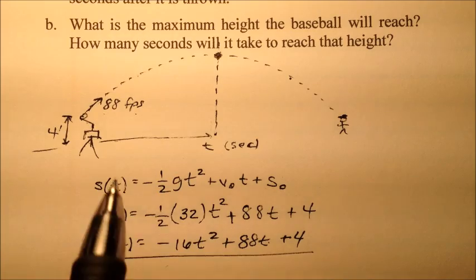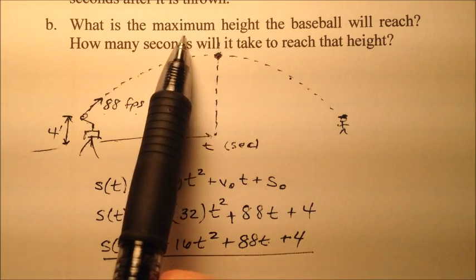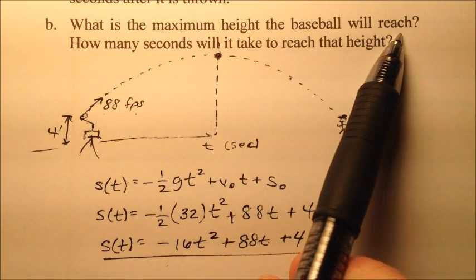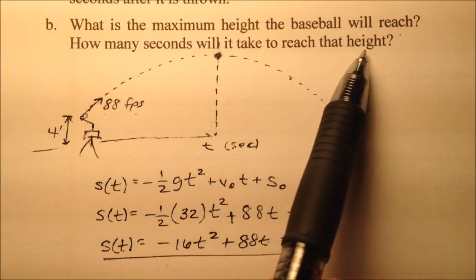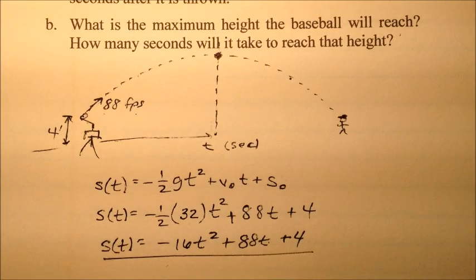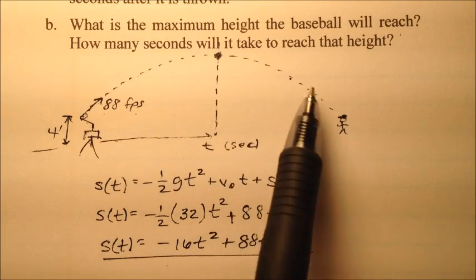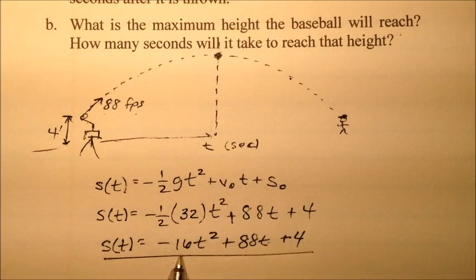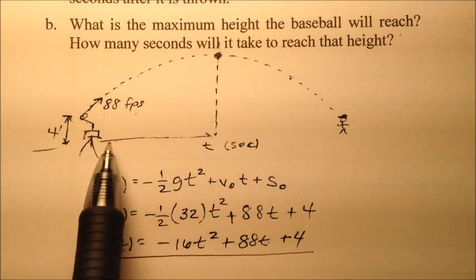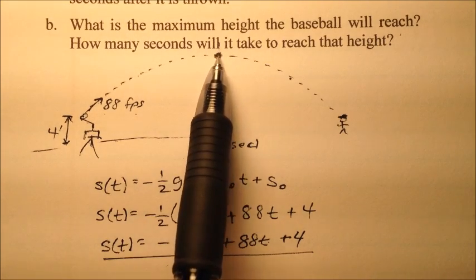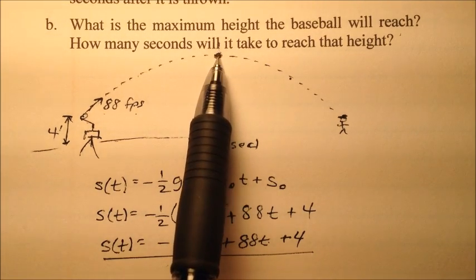In Part B, we're asked: what is the maximum height the ball will reach, and how many seconds will it take to reach that height? We have this parabola opening downward, and we know it opens downward because we have this negative in front. At its vertex, that's the peak, the highest it ever is.